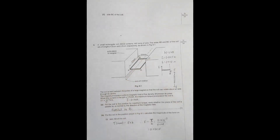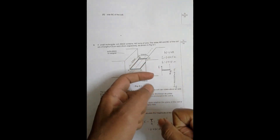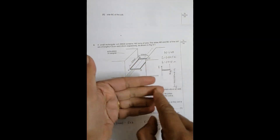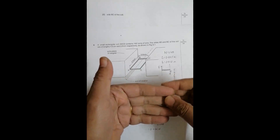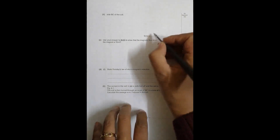Next, the force on side BC. Side BC is the wire running parallel to the magnetic field direction. Because the current and the magnetic field are in the same direction — the angle θ = 0 — there is no force at all. So the force on BC is exactly 0 Newton.